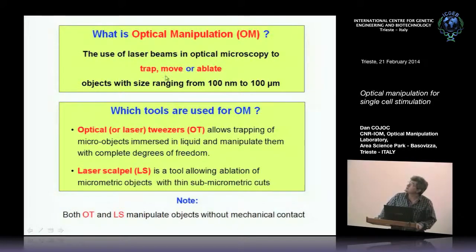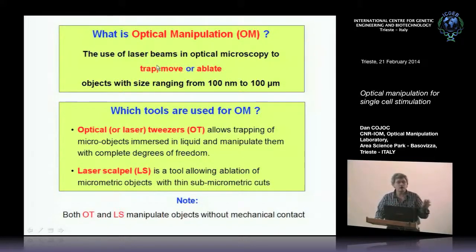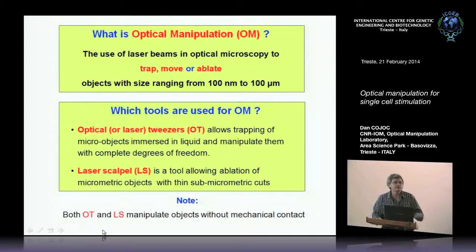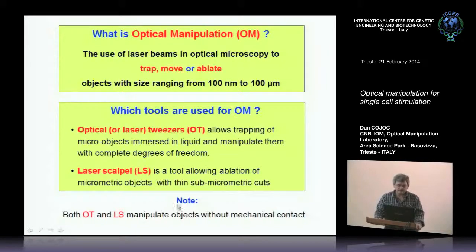What is optical manipulation? By optical manipulation, I mean the use of laser beams in optical microscopy to trap, to move, or to ablate objects with sizes ranging from 100 nanometers to 100 micrometers. Which tools are used? Like in surgery, we use tweezers and scalpels — but these tweezers and scalpels are based on light, so they do not get into mechanical contact with the particles being manipulated.